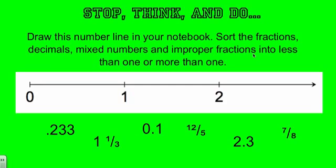Now we'd like you to stop, think, and do and solve this problem. So you need to draw this number line in your notebook. Sort the fractions, decimals, and improper fractions into less than one and more than one categories. If you can, try to sort them from smallest to largest.